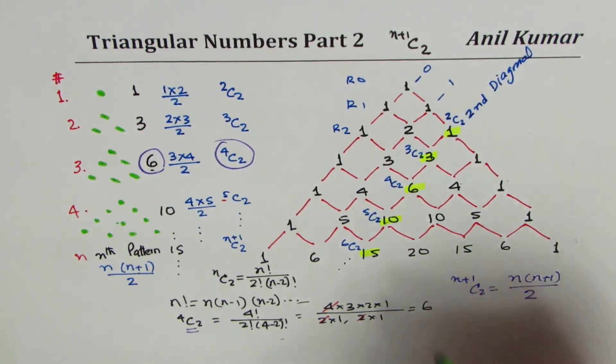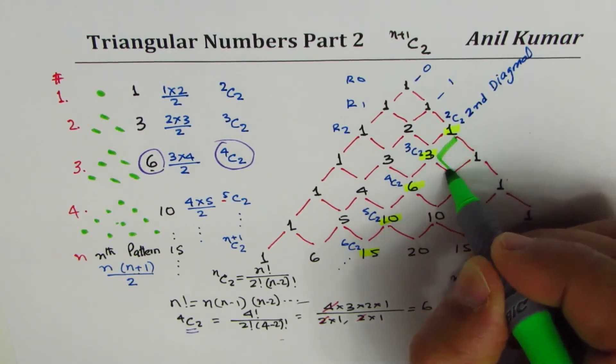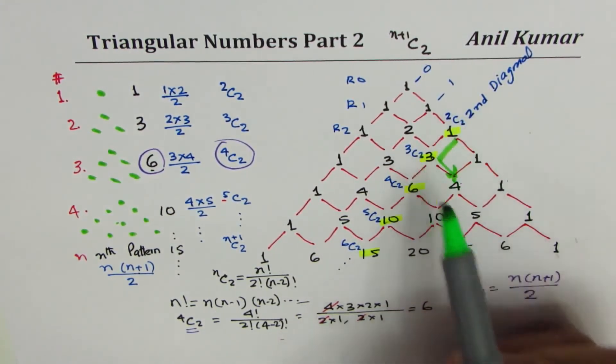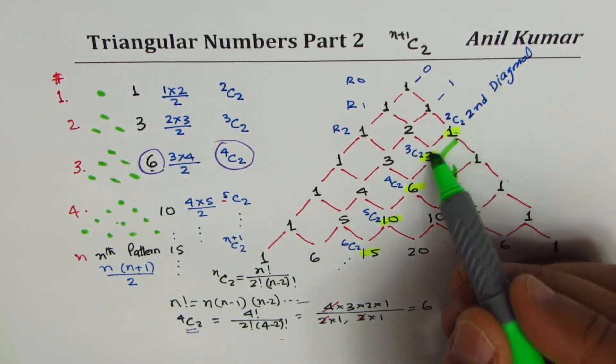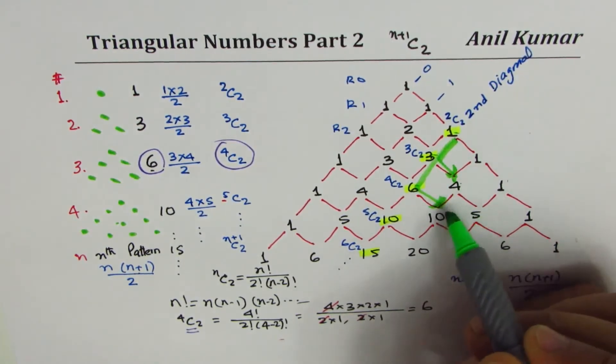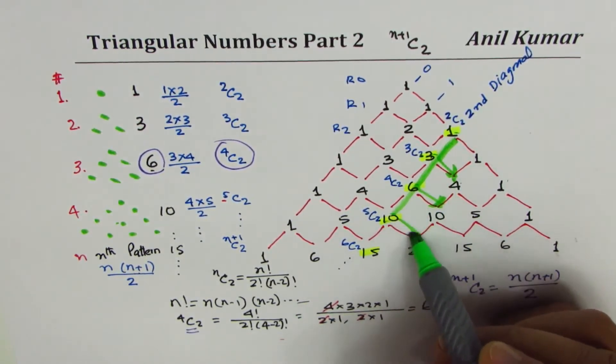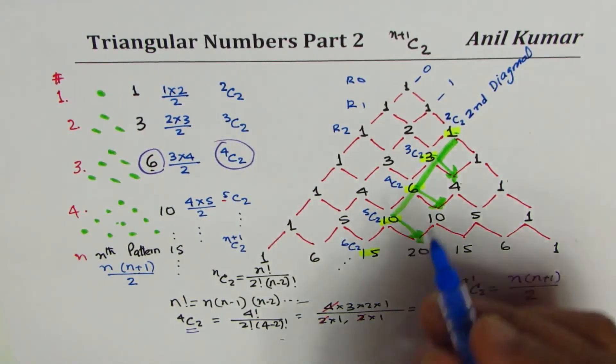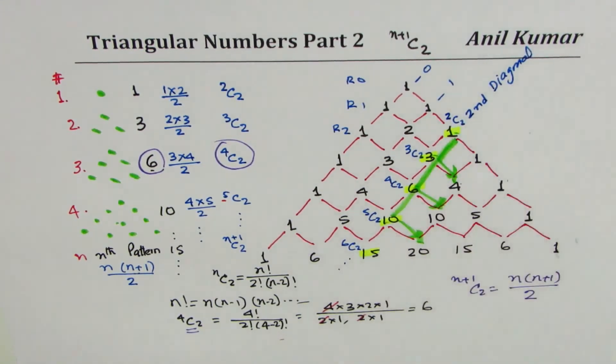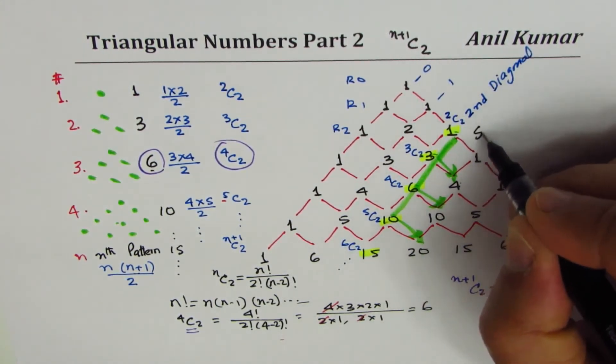When you add 2C2, 3C2, you come to the next row on diagonal. That is how it grows. This is the fourth row, and 4C3 you get. If you add 1, 3, and 6, you get 10, that's the relation. If you add these three numbers, you get that. So that gives you sum of the series. We can see sum of series very easily from this.